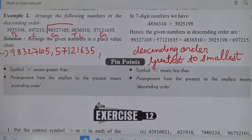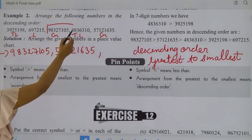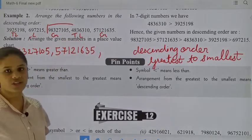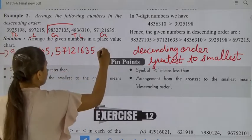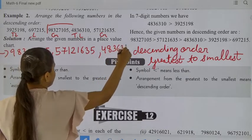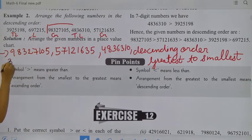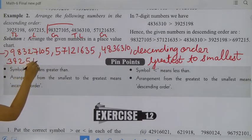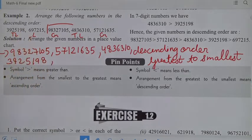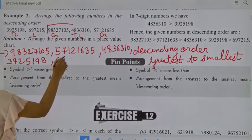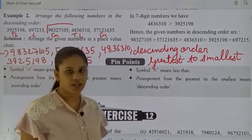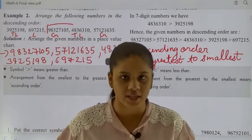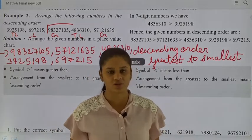Now move to the 10 lakh numbers. This is 39,25,198 and this is 48,36,310. The larger of these two is 48,36,310, then 39,25,198. And the last one is 6,97,215. So, ascending order means smallest to greatest, and descending order means greatest to smallest.